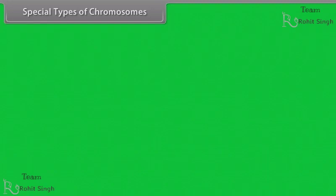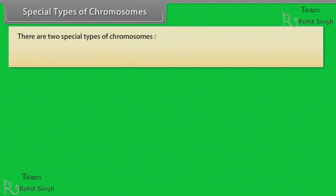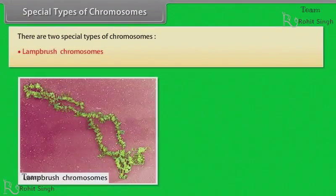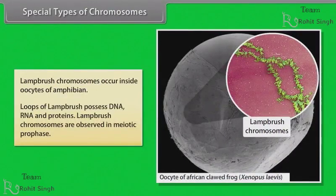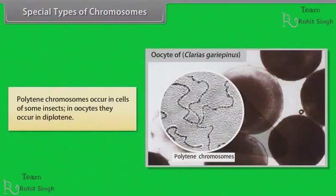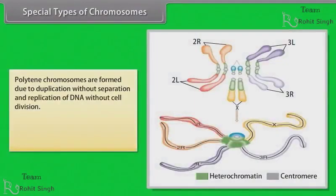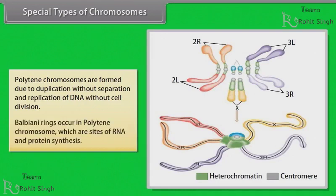Special types of chromosomes. There are two special types of chromosomes: lampbrush chromosomes and polytene chromosomes. Lampbrush chromosomes occur inside oocytes of amphibians. Loops of lampbrush chromosomes possess DNA, RNA and proteins. Lampbrush chromosomes are observed in meiotic prophase. Polytene chromosomes occur in cells of some insects; in oocytes they occur in diplotene. Polytene chromosomes are formed due to duplication without separation and replication of DNA without cell division. Balbiani rings occur in polytene chromosomes, which are sites of RNA and protein synthesis.